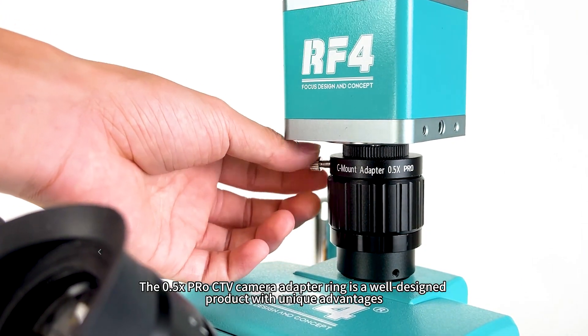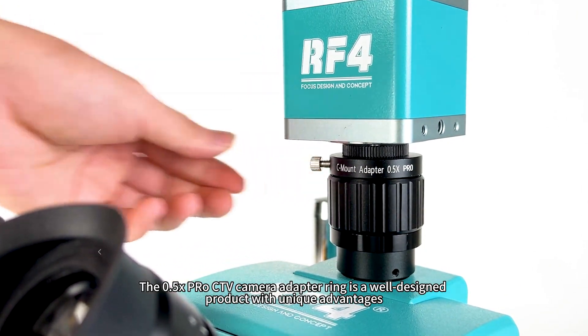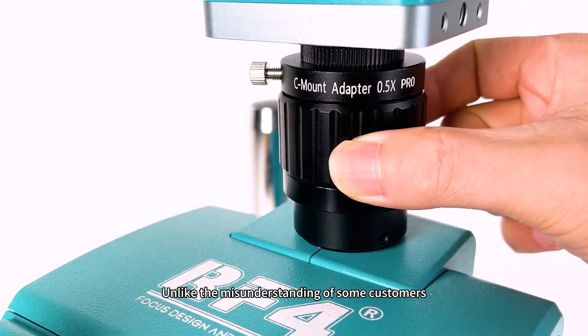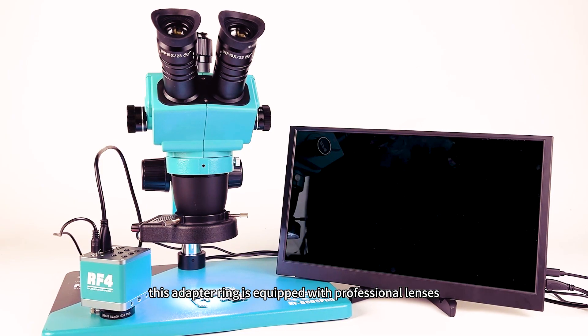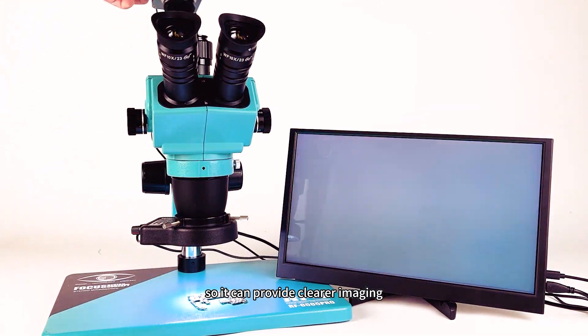The 0.5x Pro CTV Camera Adapter Ring is a well-designed product with unique advantages. Unlike the misunderstanding of some customers, this adapter ring is equipped with professional lenses, so it can provide clearer imaging.